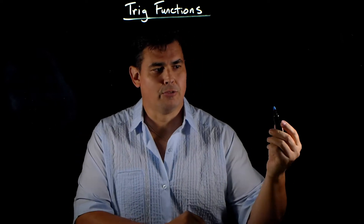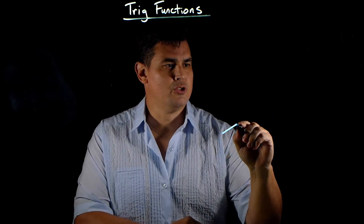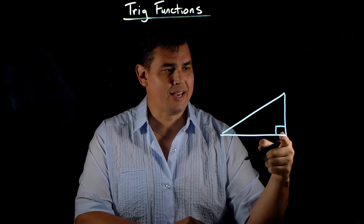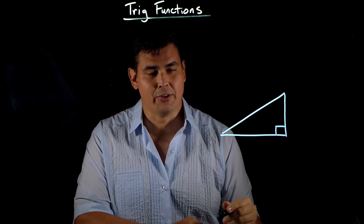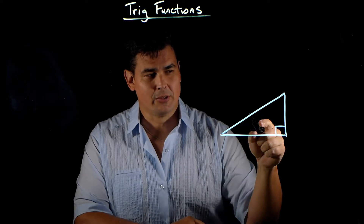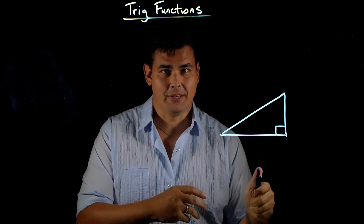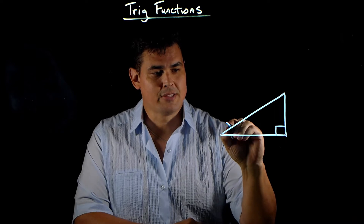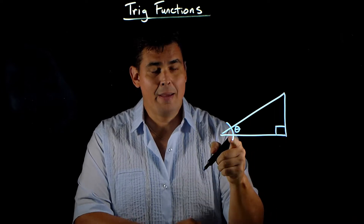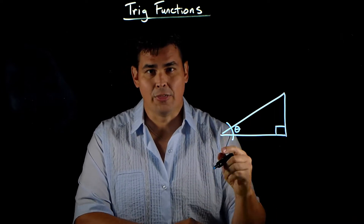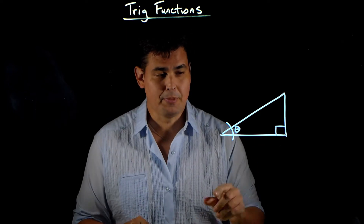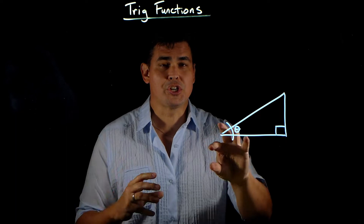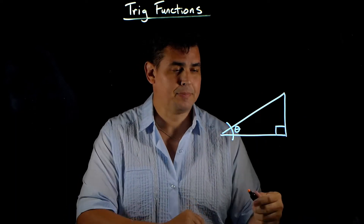Trig functions involve right triangles. So if I draw a right triangle, there's one angle that's 90 degrees. And then there's two other angles that you get the flexibility to define, and you define it with the Greek symbol theta.